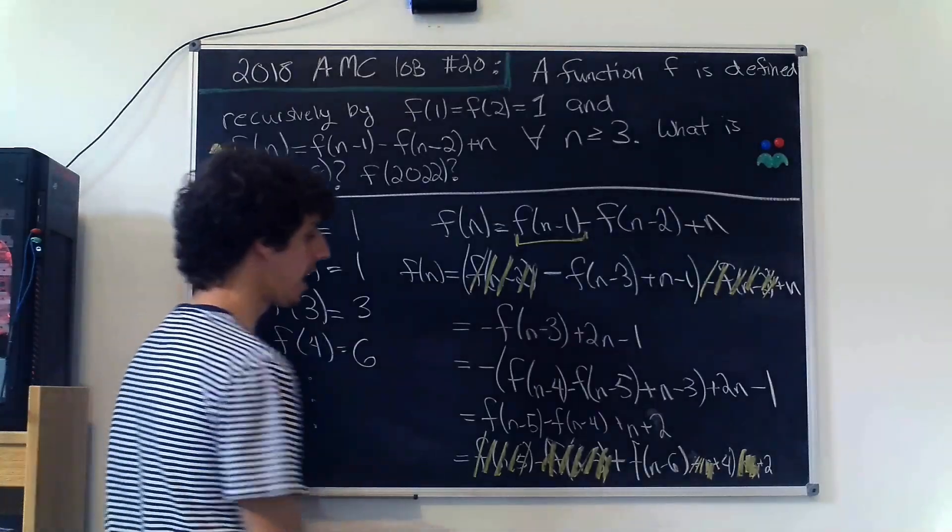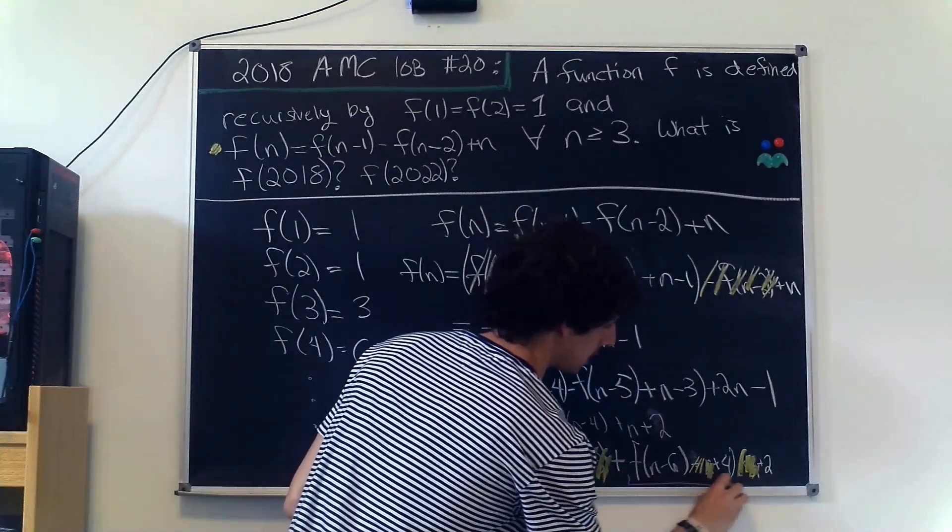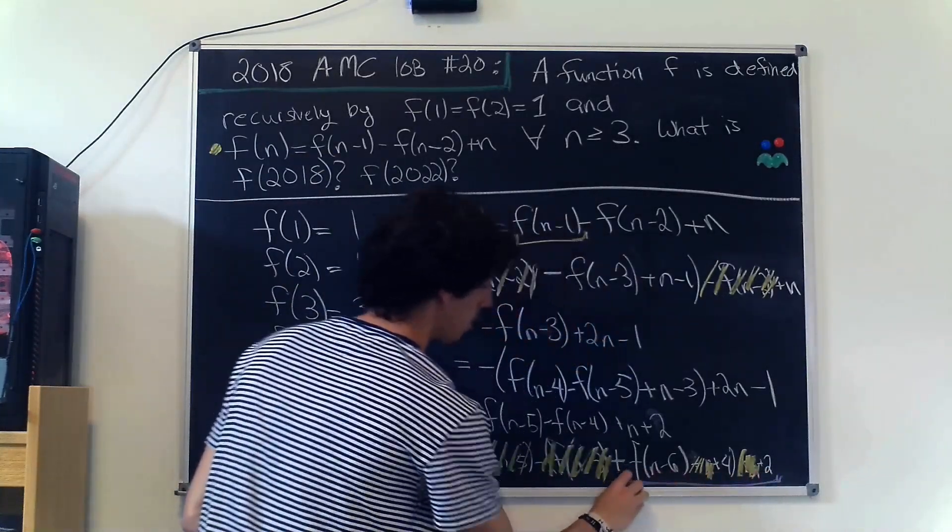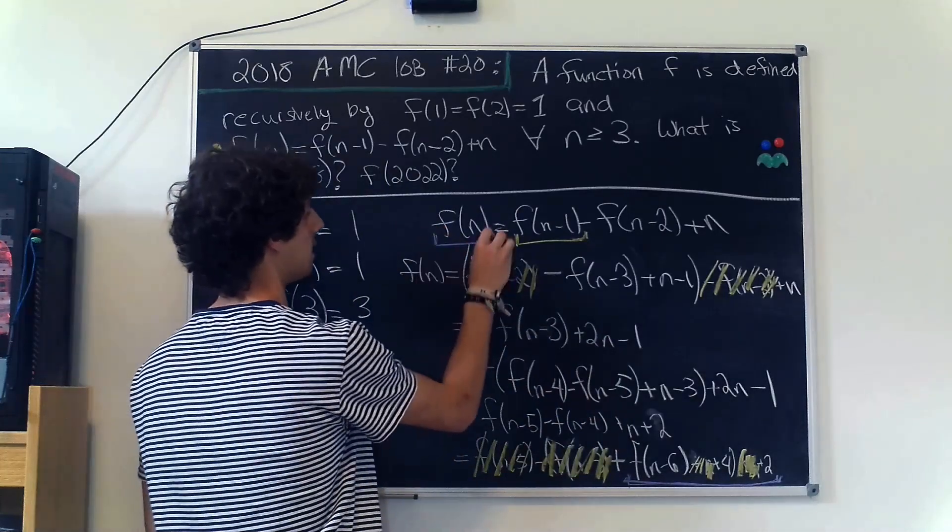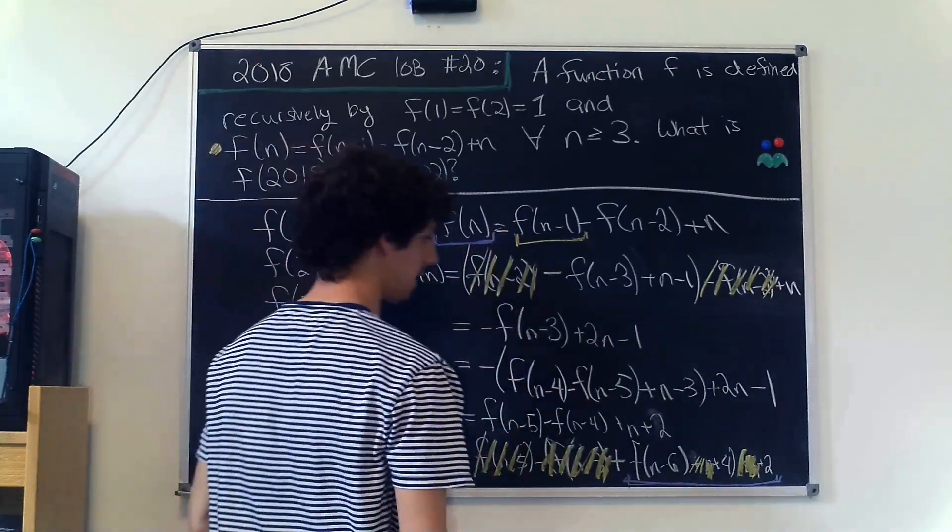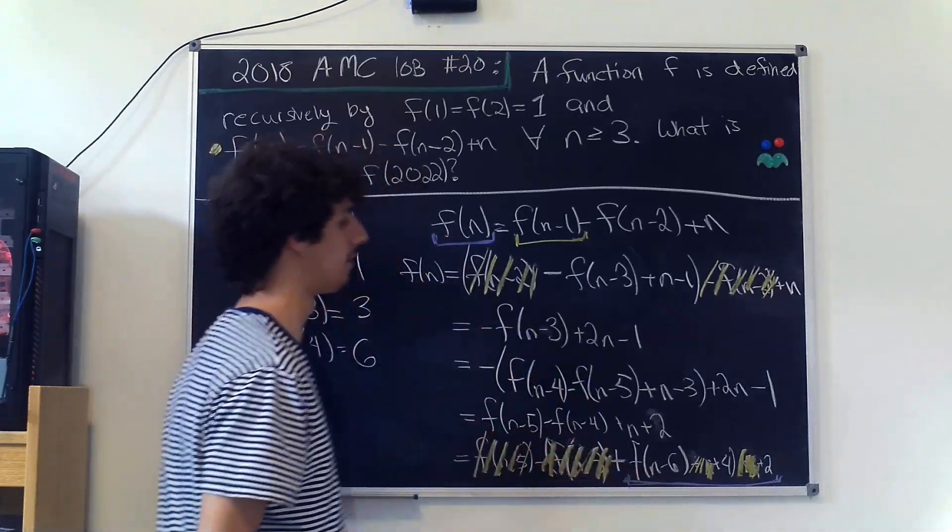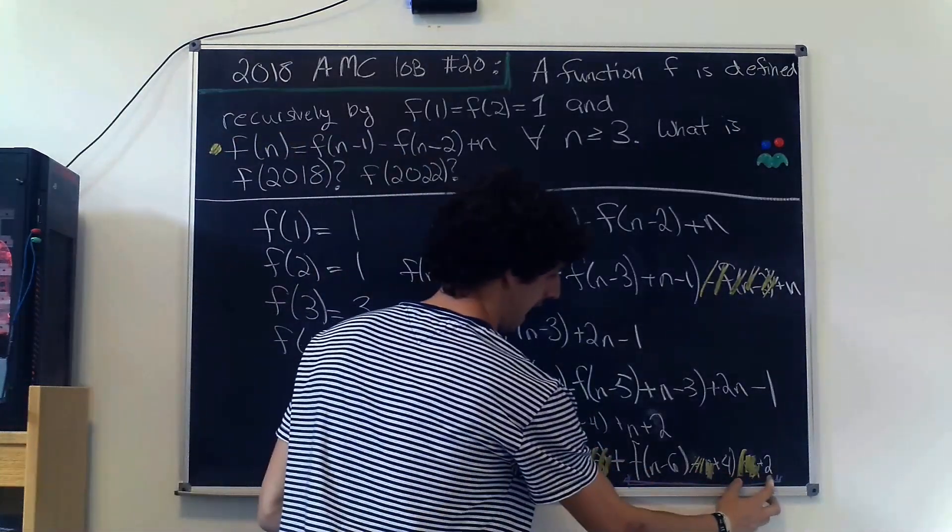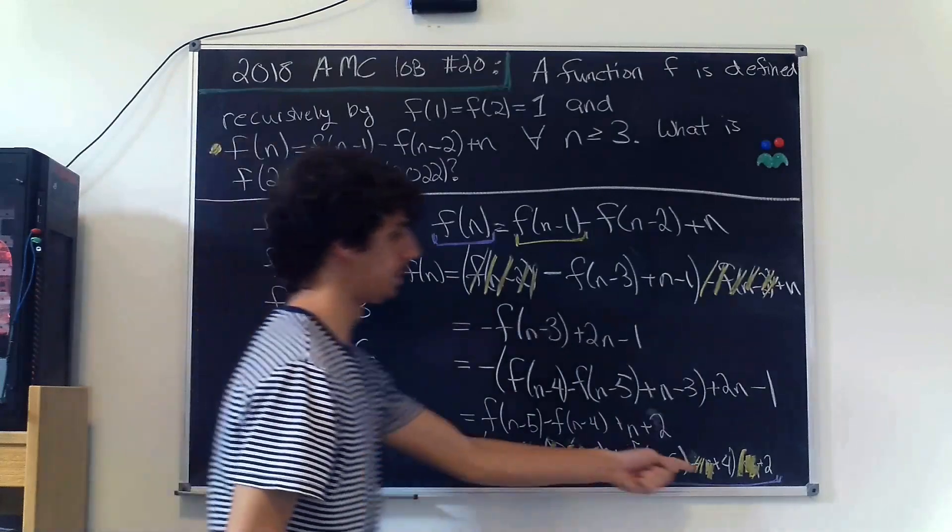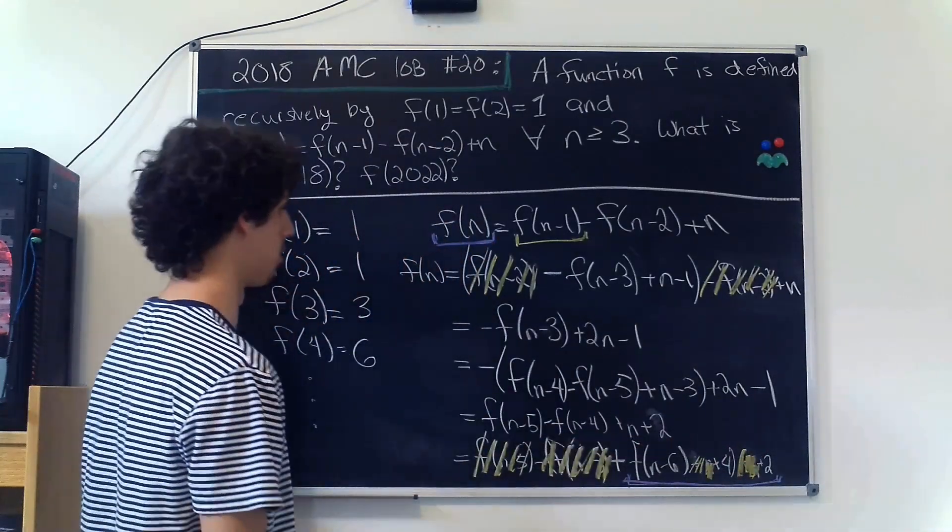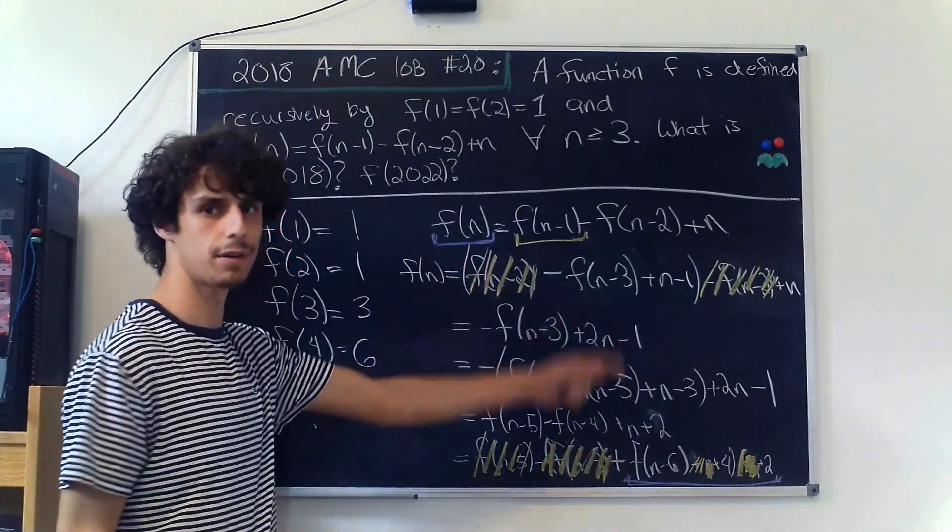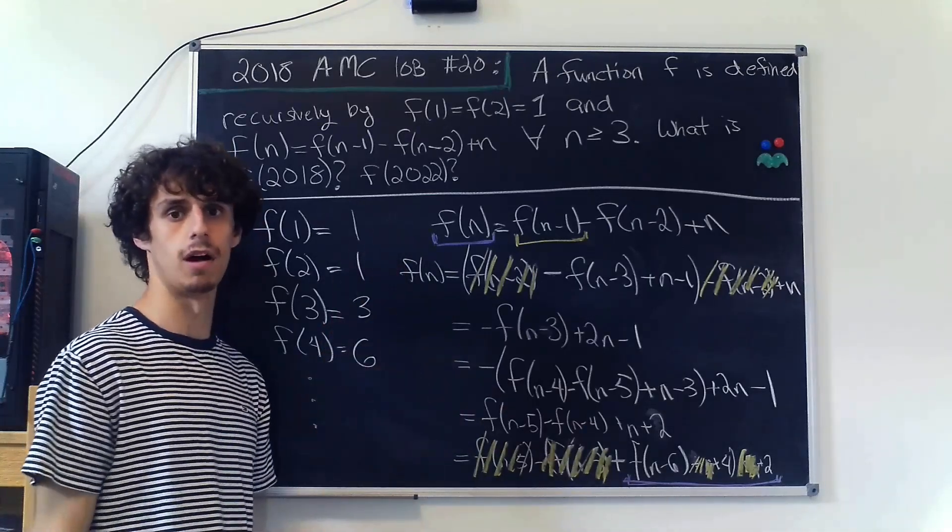And if we compare the extreme right-hand side of the equation with the extreme left-hand side of this equation, we find that every single time we decrease this value inside the function by 6, we simply add 6 to it, because this plus 4 plus 2 combined to make a plus 6. So let's get rid of this and then we'll note that up here and we'll finish this problem off.